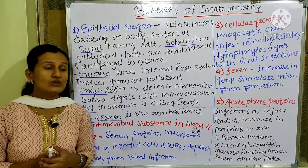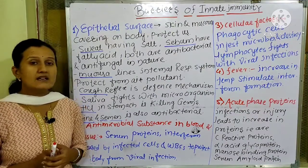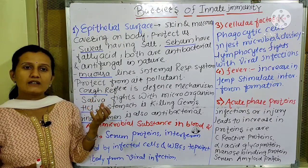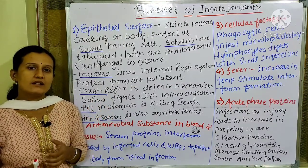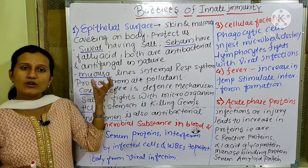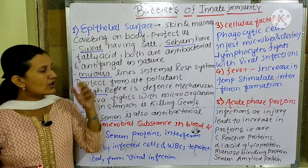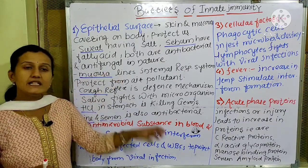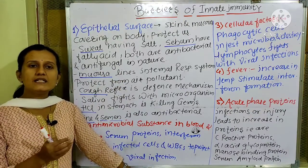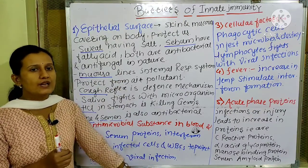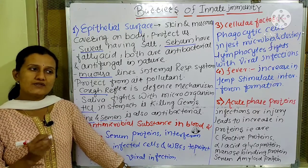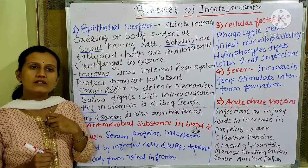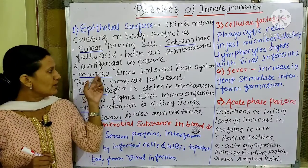Sebaceous glands contain a long chain of fatty acids included in the sebum or oil, which helps in the antibacterial or antimicrobial activity of the body. Next, there is mucosa lining the internal respiratory system and the internal digestive system, which is also helpful in protecting us from various infections. The internal respiratory system has ciliated epithelium with a lining of mucosa — a small lining of the respiratory and digestive system.